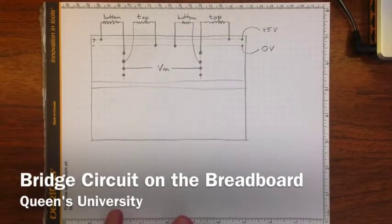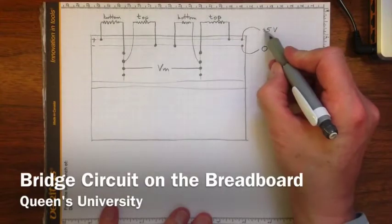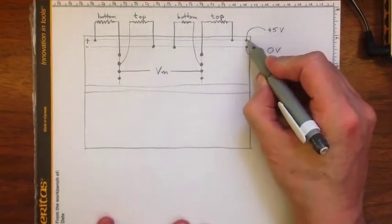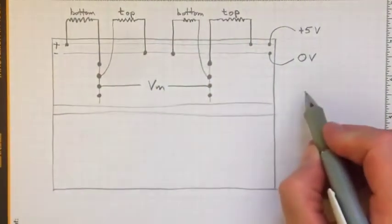If I wanted to set that up on my breadboard, the first thing I would do is take the plus 5 volt line from my Arduino and connect it to the positive side bus that runs all the way along the rail of the breadboard.